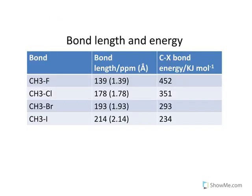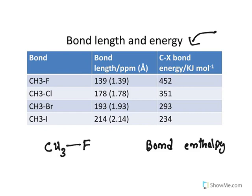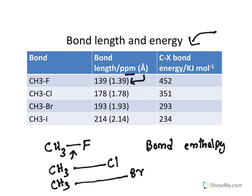Bond energy, also known as bond enthalpy, is the energy required to break a bond. It is inversely proportional to bond length: shorter bonds have stronger electron overlap and higher bond energy. Going down the group, bond length increases and bond energy decreases. So C–F has the highest bond energy and C–I has the lowest. Again, understand the pattern — shorter bonds are always stronger bonds due to greater electron overlap.